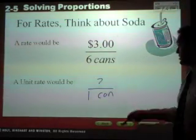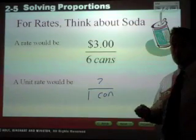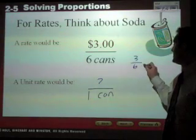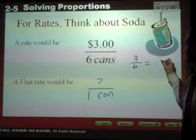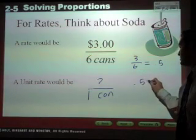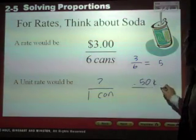To figure out what that would be, you can do a couple of things. You can divide. You can say three divided by six as a decimal is 0.5, which is just 50 cents for every one can.